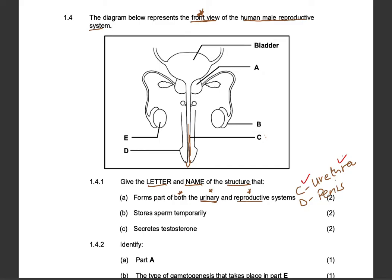The second question asks for the letter and name of the structure that stores sperm temporarily. This one is obvious — it is the epididymis. The letter is B and the structure is the epididymis.